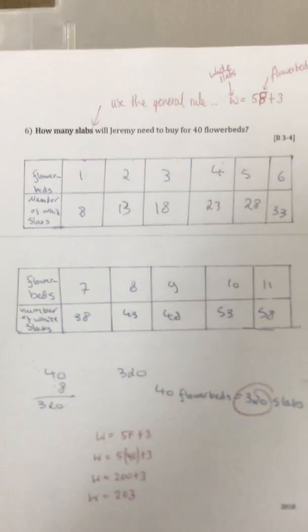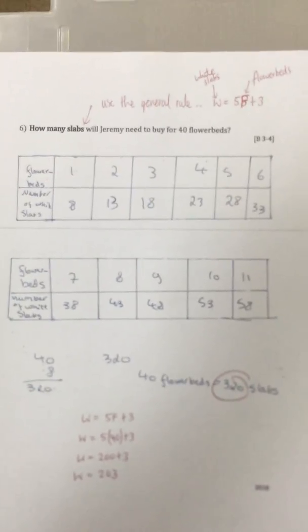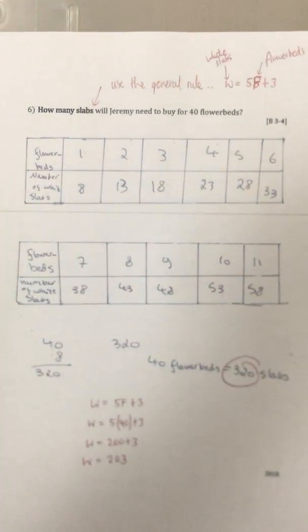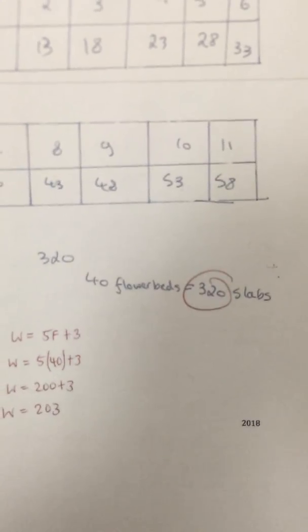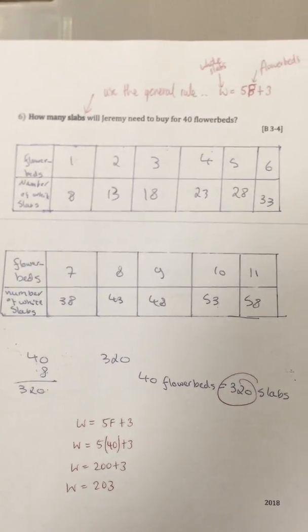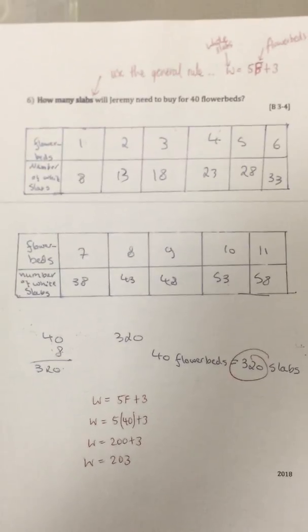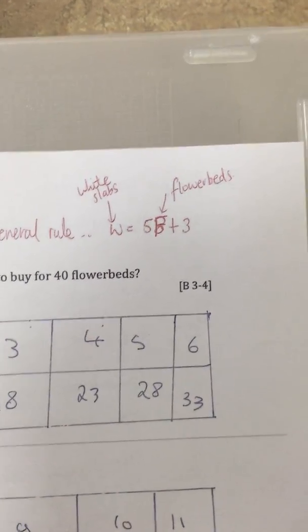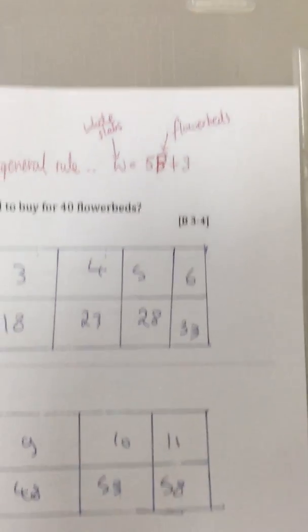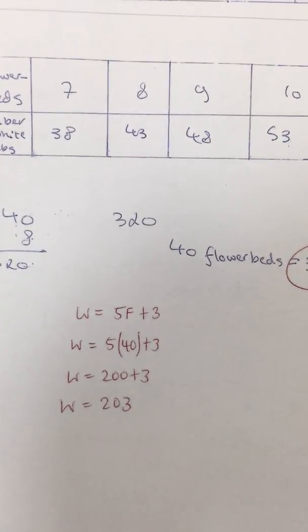A little advanced question: how many slabs would there be for 40 flower beds? This is to test students. This particular student got it wrong — they somehow did 40 times 8, which gave 120. They were unable to count up 5 forty times from 8 because it takes too long and it's easy to make mistakes. They didn't use the general rule. The general rule is white slabs = 5 × flower beds + 3, so all they had to do was 5×40+3 = 203.